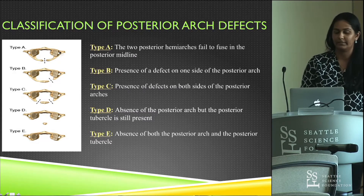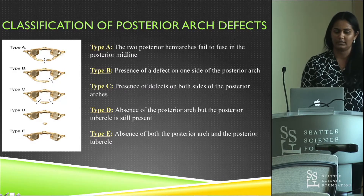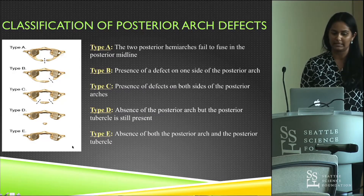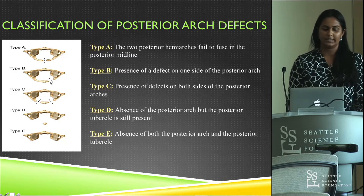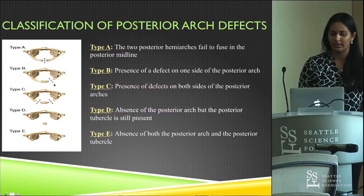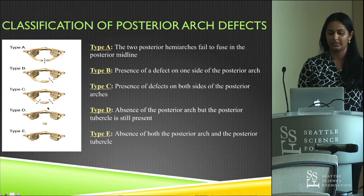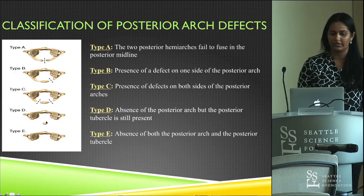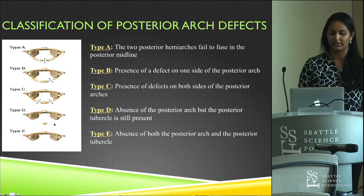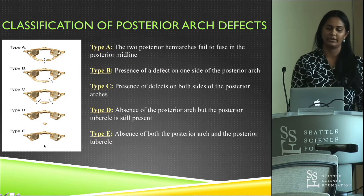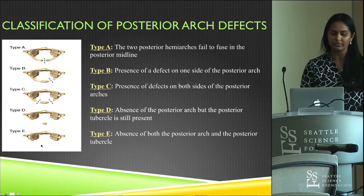Types C through E account for the remaining 3%. In Type C there is a cleft on both sides, leaving a posterior osseous fragment. In Type D, only the posterior tubercle remains along with the entire arch being absent.